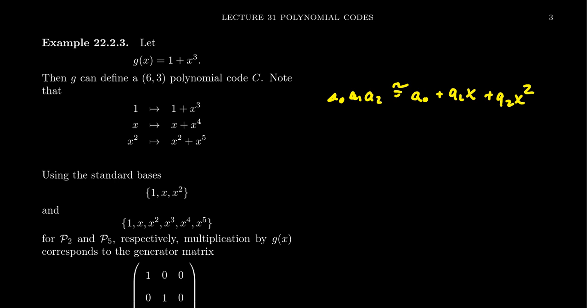And as such, when it comes to this encoding process, it's often important to look at the standard basis for Z2^3 in that situation. So that would be like the vector (1,0,0), (0,1,0), and (0,0,1).